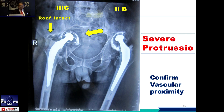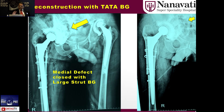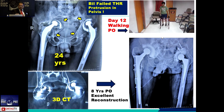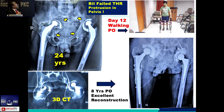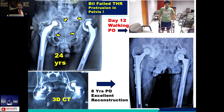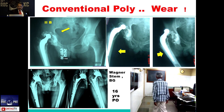For severe bone loss cases, the ETO again gives excellent exposure. Remove the stem, debride everything clearly, and assess the bone quality. If the superior bone is good, impaction bone grafting can be done. Assess whether a plate is required based on available bone support. A similar technique applies for poly wear, osteolysis, and dislocation cases.